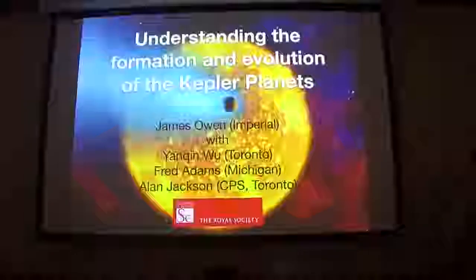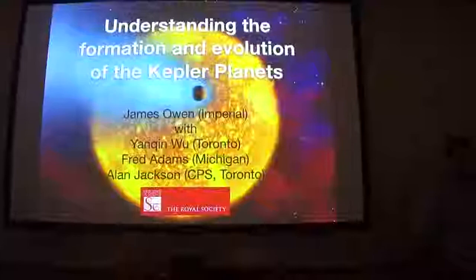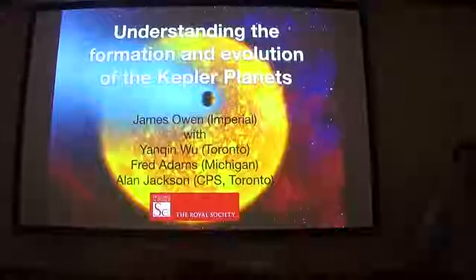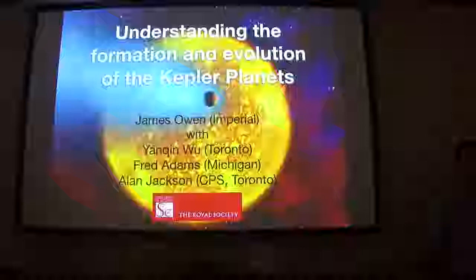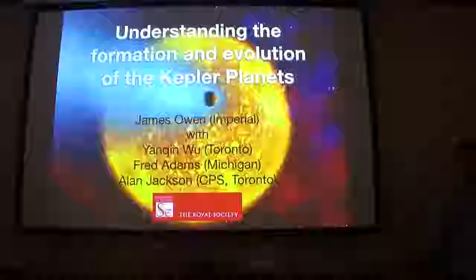James Owen is a Royal Society fellow at Imperial College London. He received his bachelor's, master's, and PhD degrees from the University of Cambridge, after which he was a postdoc at CITA and a Hubble fellow at the Institute for Advanced Study before joining the faculty at Imperial. Today he will tell us about the formation and evolution of exoplanets.